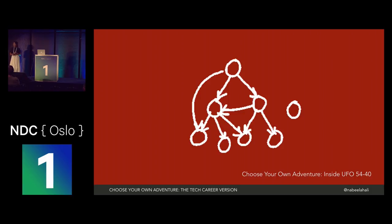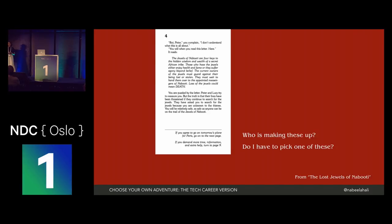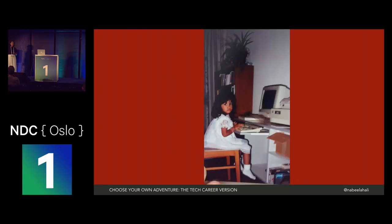The endings that were hidden were often the good ones. As I started to get older, I began to think: sometimes life seems a bit like a choose-your-own-adventure book. I have options, but who is making up these options? And do I have to pick one of them? Is there something else I could choose?